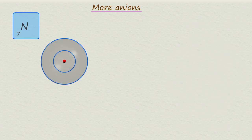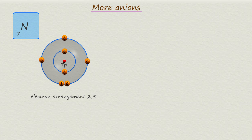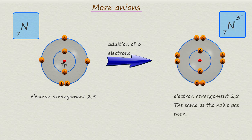Consider an element from group five of the periodic table, such as nitrogen. Nitrogen has an atomic number of seven, so it contains seven protons in its nucleus and seven electrons in its shells with an electron arrangement of 2-5. The nitrogen atom needs to gain three electrons to fill its outer shell, and it will form an anion with a three minus charge.